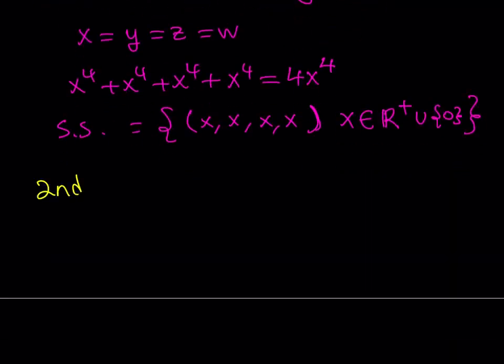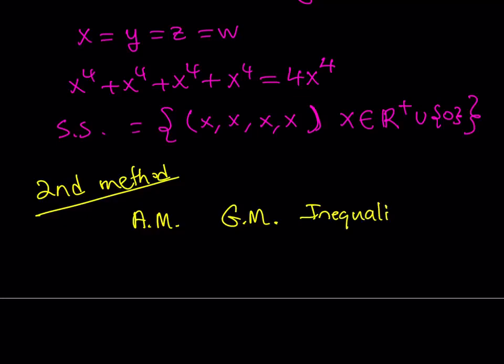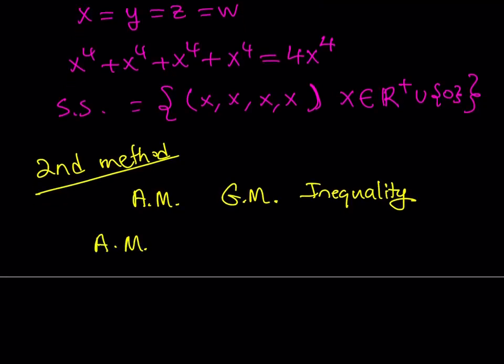Now let's talk about the second method, which uses inequalities — the AM-GM inequality. For non-negative real numbers, the arithmetic mean is always greater than or equal to the geometric mean, with equality holding when all the terms are equal.